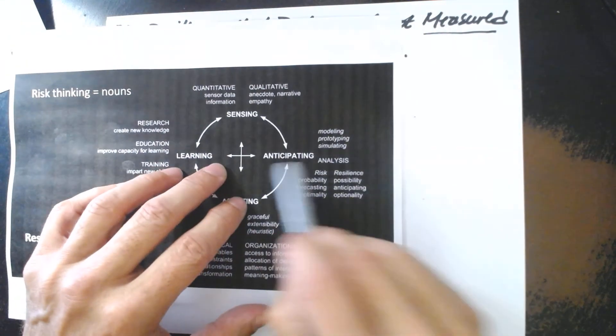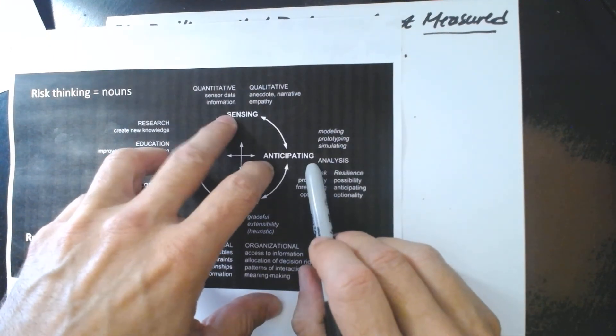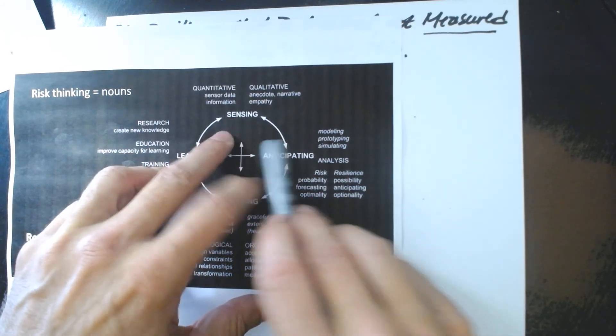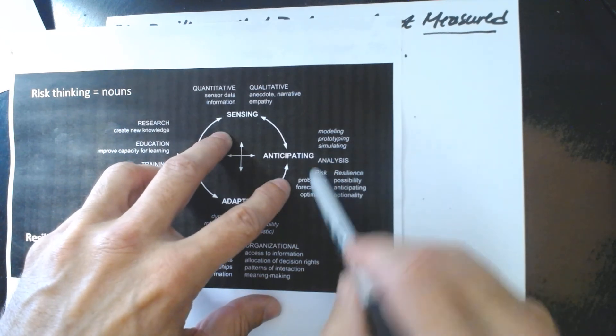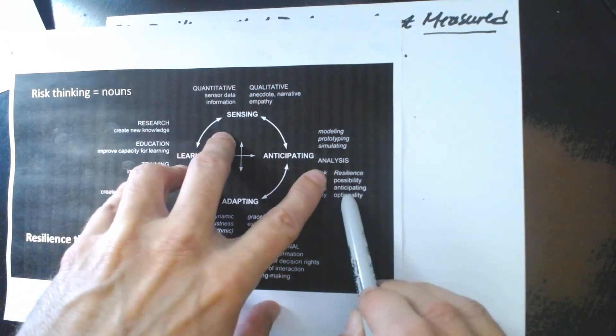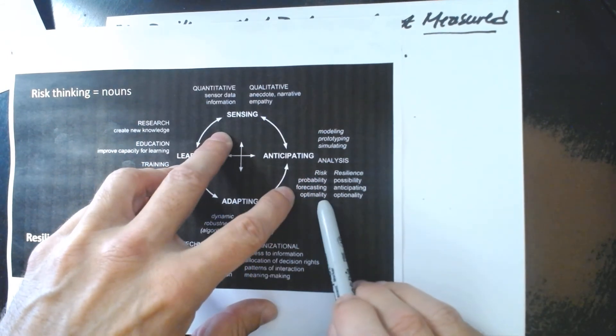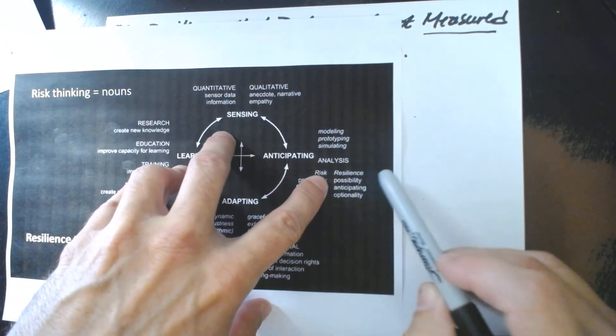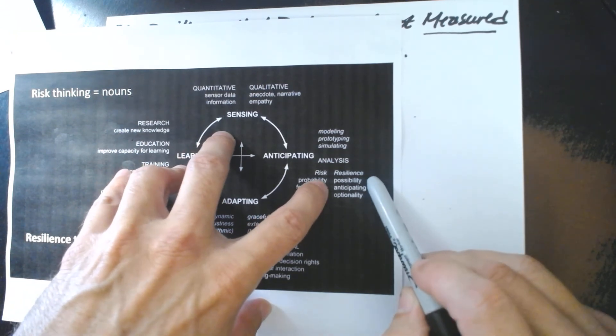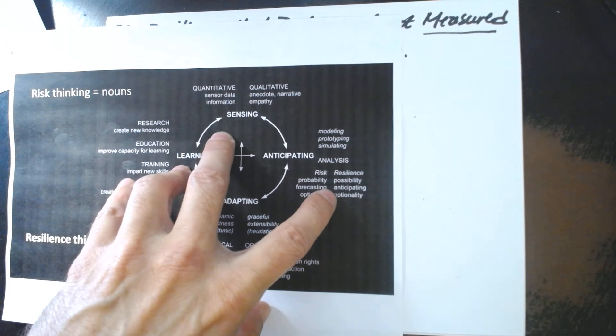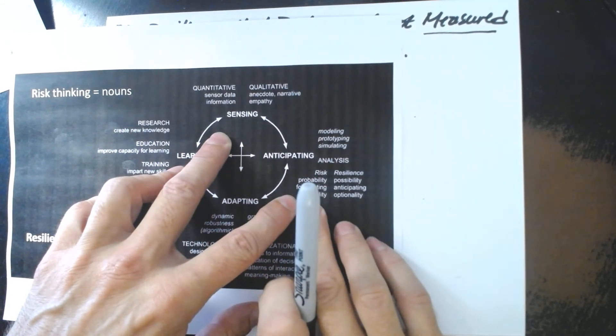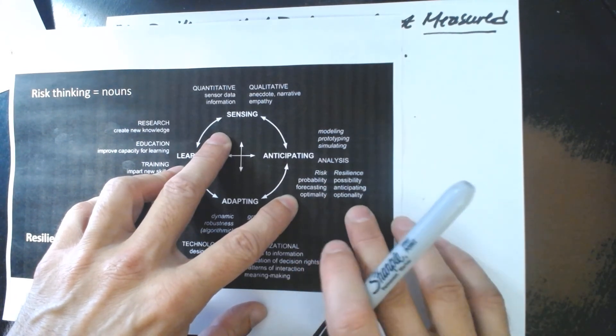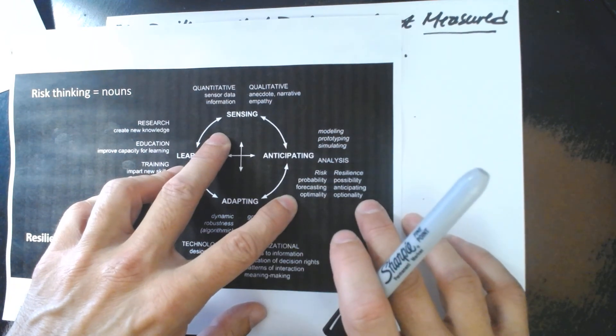Anticipating. When we're anticipating, we're no longer thinking about this current state that we can sense. We have to imagine future states that don't yet exist. And it's in our imagining the future states that we prepare for them. Certainly, risk does anticipating. It does through probability and forecasting and optimality. That is planning for the minimum hazard times probability scenarios. And attempting to steer the future towards those. But resilience is different. Resilience doesn't ask about probability. Resilience is trying to examine possibility. Resilience doesn't do forecasting. It does anticipating. And resilience is not about optimality. Resilience is about maximizing optionality. How do I act now so as to not constrain, to give myself maximum adaptive capacity in the future?